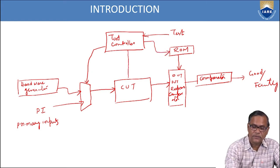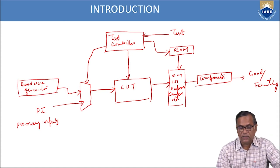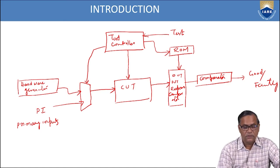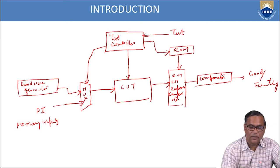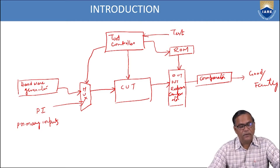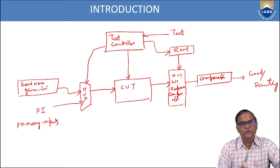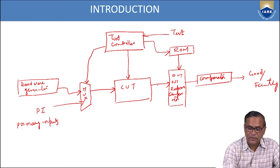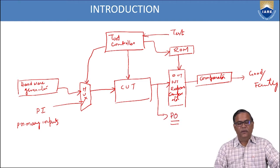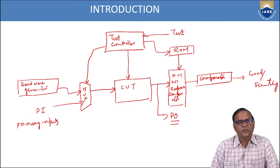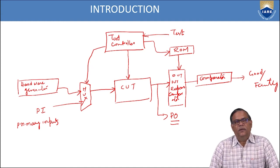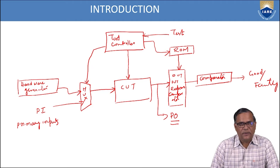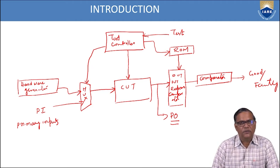There is also a signal from the test controller to the CUT via the multiplexer. When the test signal is active, the test patterns are given to the CUT; otherwise the primary inputs are given to the CUT. The primary outputs come from the circuit under test. So this is a brief overview of the block diagram of BIST — it mainly contains the test pattern generator, the test controller, and the output response analyzer.